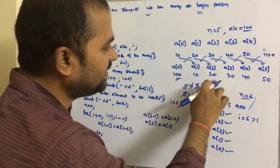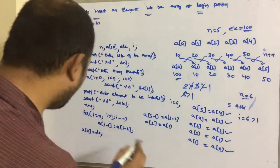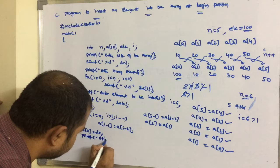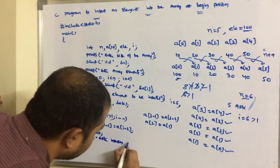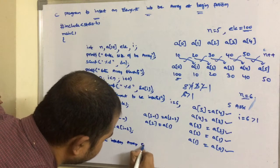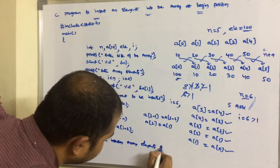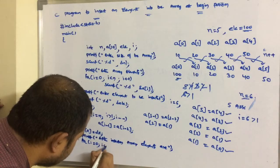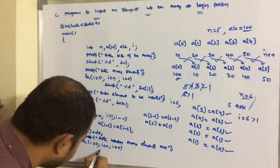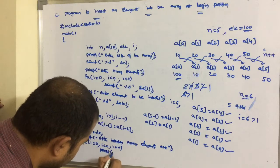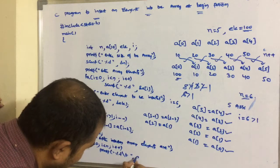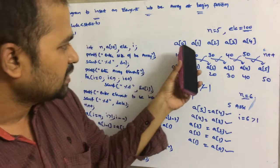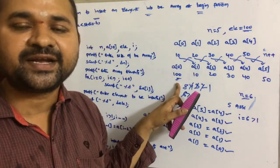To display the output: printf("After insertion array elements are"). Then a for loop from i=0 while i less than n, i++, with printf("%d ", a[i]) to print each element. In this way we can insert an element into the array at the beginning position.